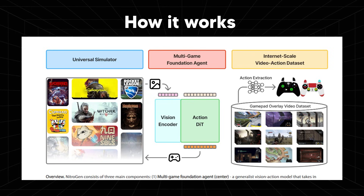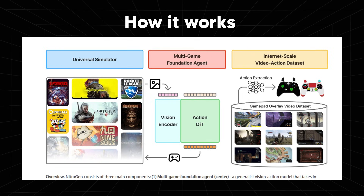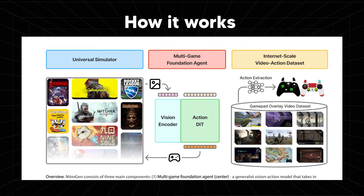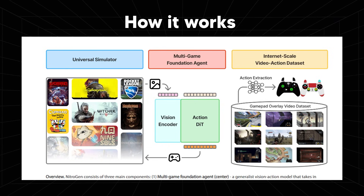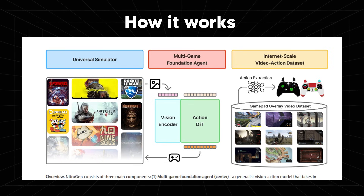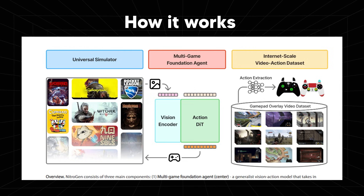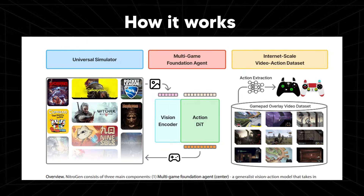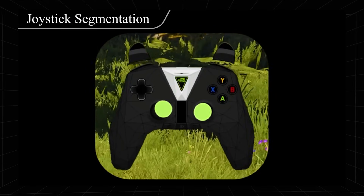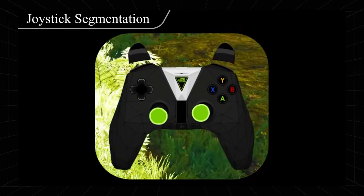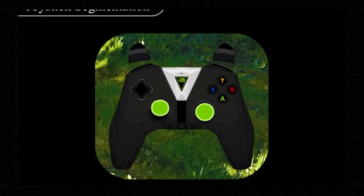Next, we have the Multi-Game Foundation Agent — the actual AI model, the actual brain. There's the vision encoder, which takes the frame and turns it into a compact visual representation. There's no text, no game state, no memory dump — this is purely vision. Then we have the Action DIT, which generates chunks of future controller actions: buttons, joystick movements. This uses diffusion and flow matching to produce smooth, realistic actions over time. Instead of predicting one button press, it predicts a sequence of actions, which makes the gameplay stable and human-like.